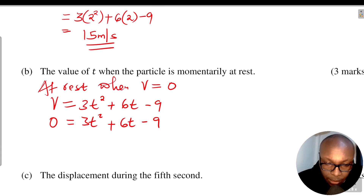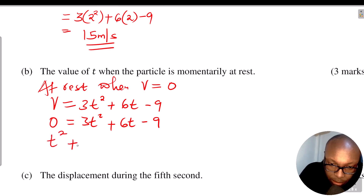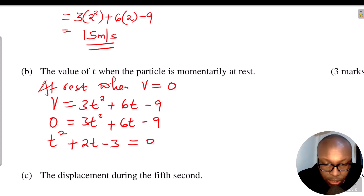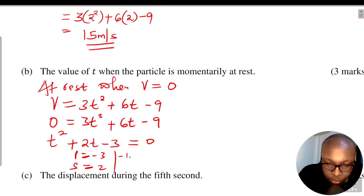We simplify the equation by dividing everything by 3, giving t² + 2t - 3 = 0. We solve this quadratic by looking for two numbers whose product is -3 and sum is 2. Those numbers are -1 and 3.